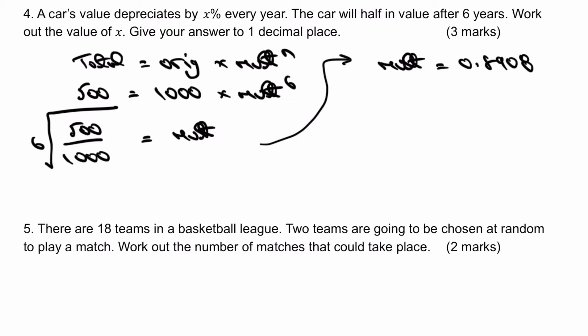To work out the value of the multiplier, all I would do is rearrange this formula to 500 over 1000, and then it's basically the sixth root. That means I get a multiplier of 0.8908. That basically means it's reduced, it's less than 1, which is less than 100%. So the depreciation is going to equal 1 minus the actual answer, multiply it by 100, which is 10.9%.